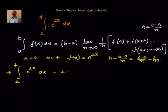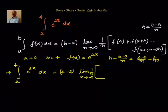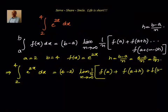(b − a), that is (4 − 2), times limit n tends to infinity, (1/n) multiplied by the bracket: f(2) + f(2 + h) + f(2 + 2h), continuing for n terms.